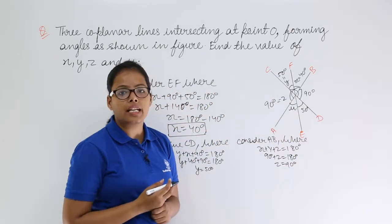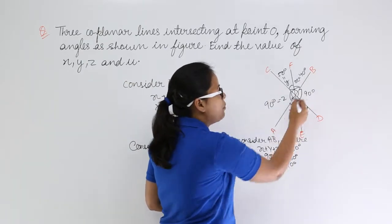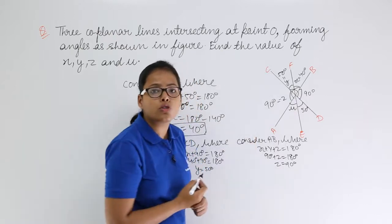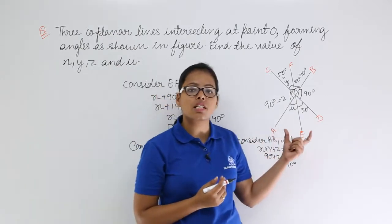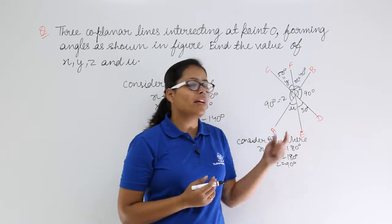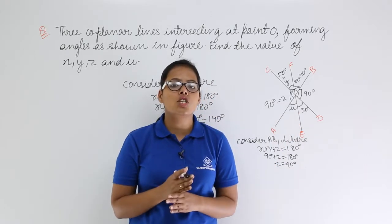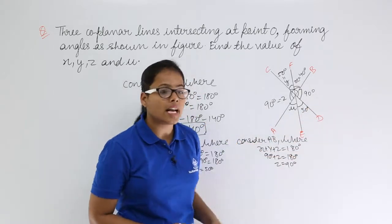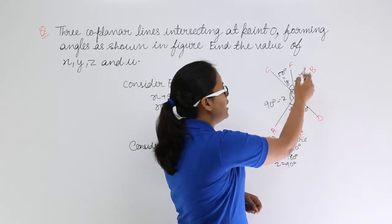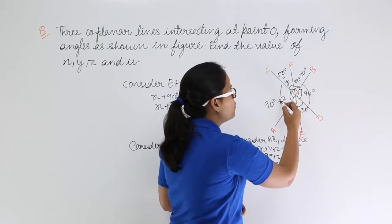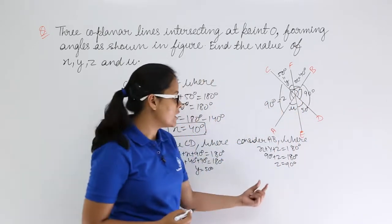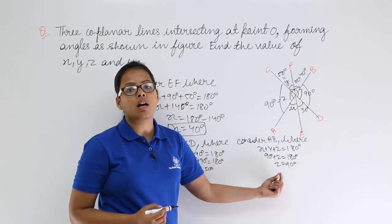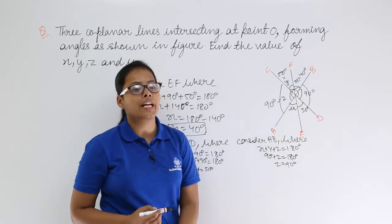You can also get z directly. Lines CD and AB intersect each other, so their opposite angles are equal. Since the angle on the CD side is 90 degrees, the vertically opposite angle on AB is also 90 degrees. That confirms z = 90 degrees.